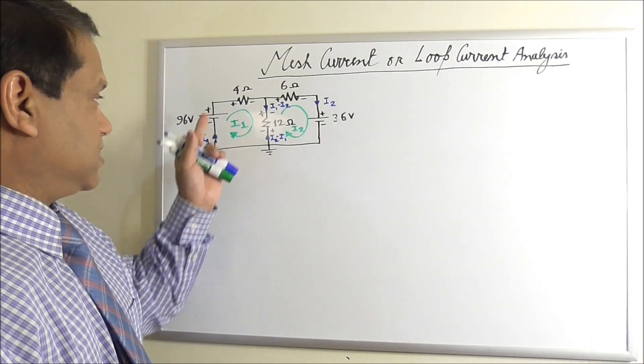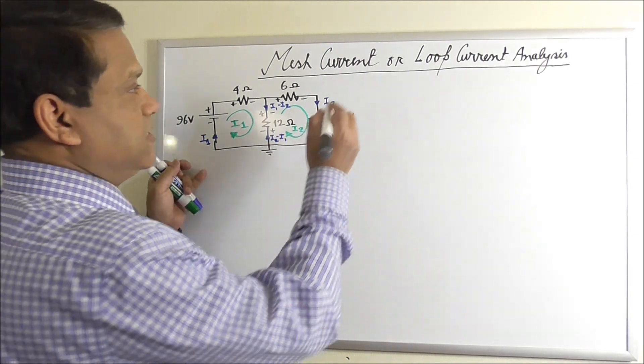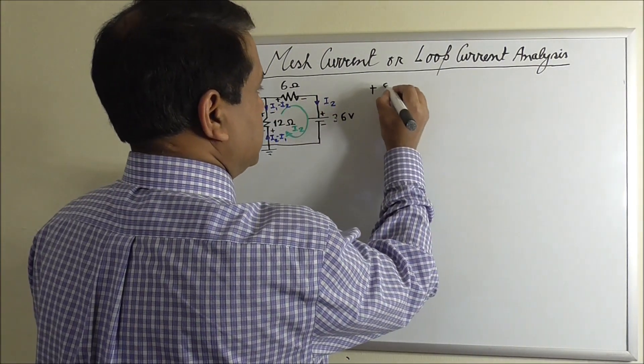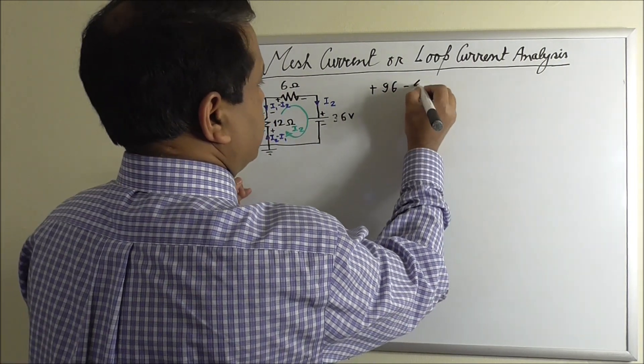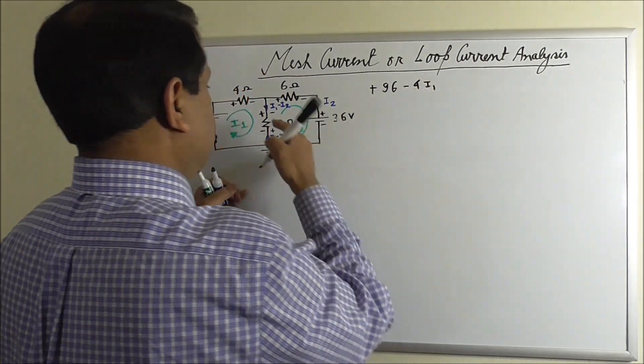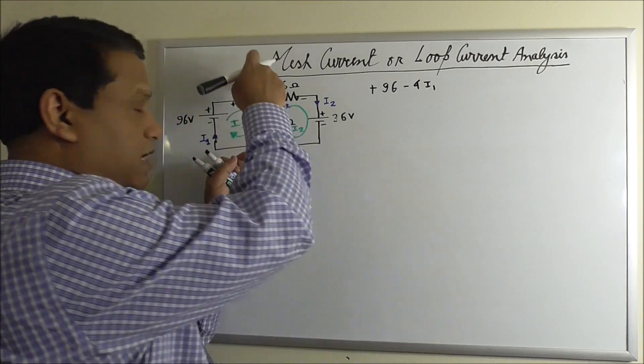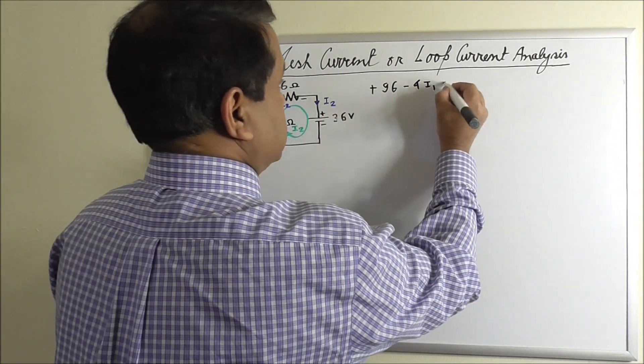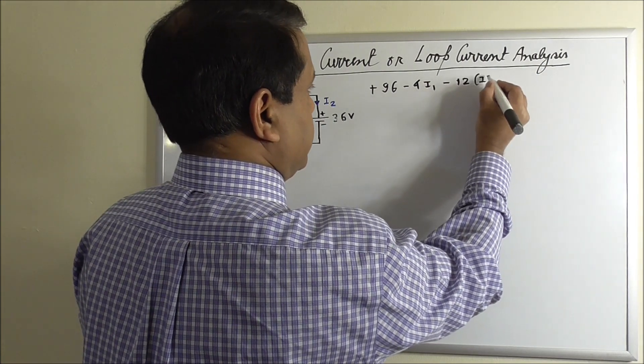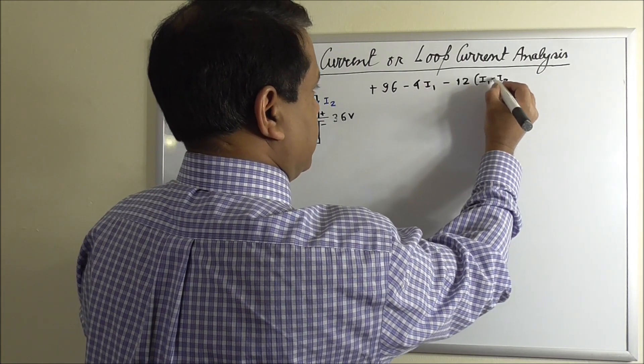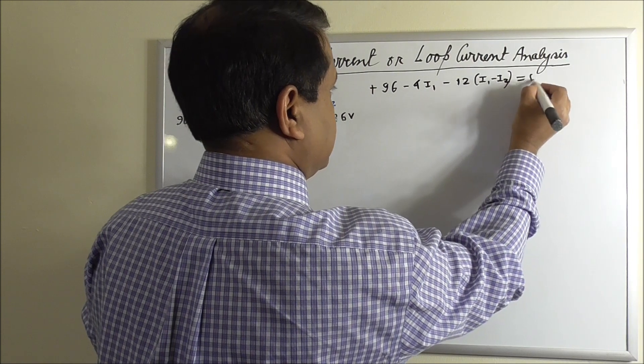So let us first write the equation for this loop. This will be plus 96 minus 4 I1. Here we will write, we will assume current is downward, I1 minus I2. So minus 12 (I1 minus I2) equals 0.